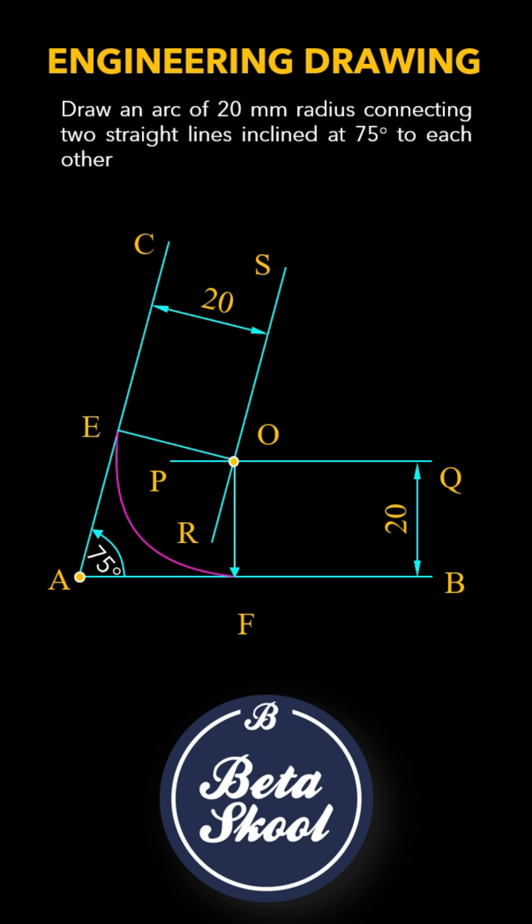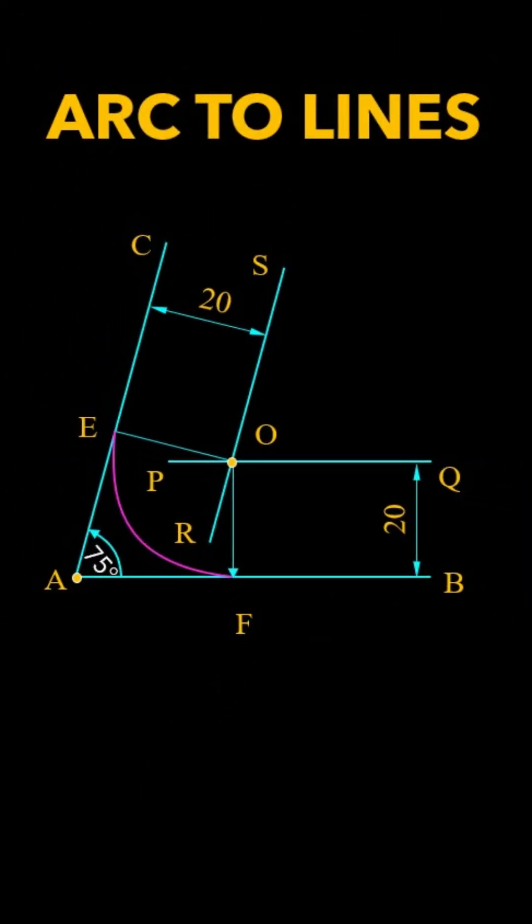We've successfully constructed an arc of 20mm radius connecting two straight lines inclined at 75 degrees to each other.